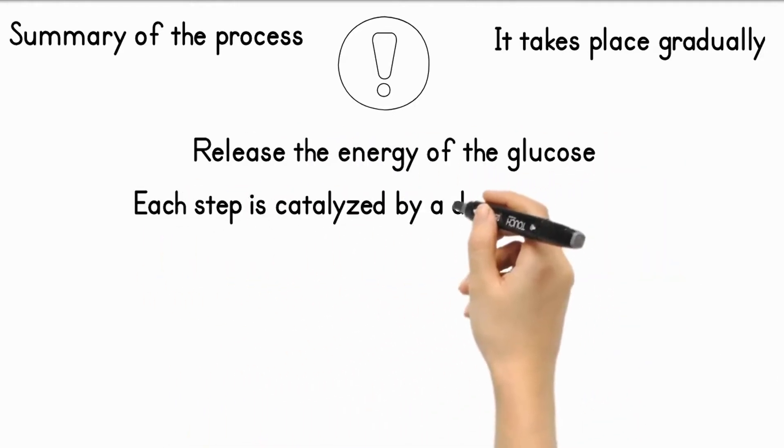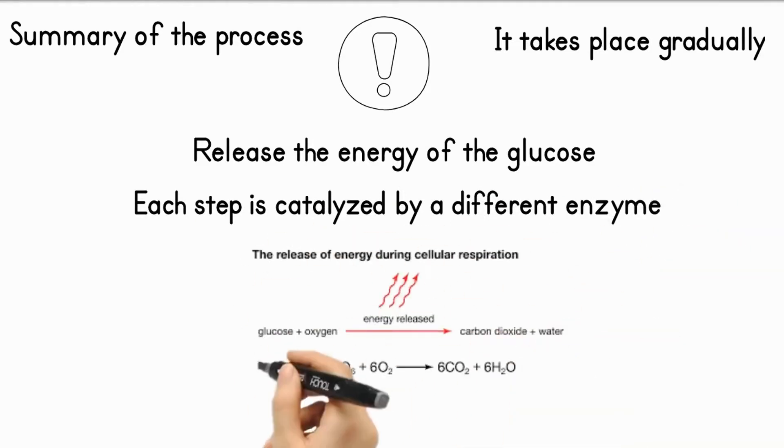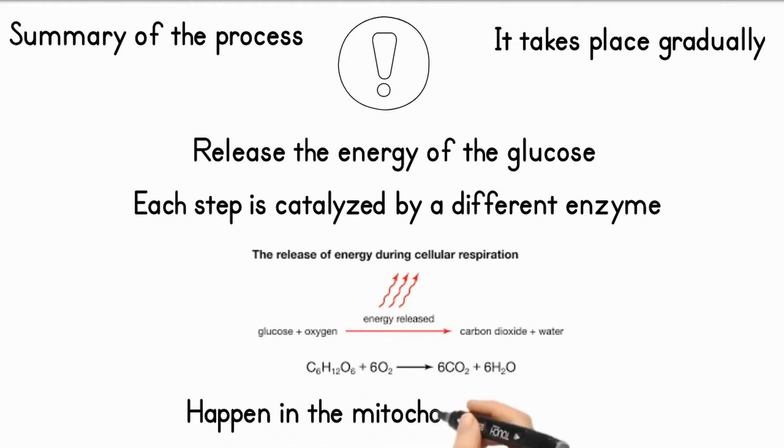Each step in the process is catalyzed by a different enzyme. The later steps in the process are the aerobic ones and these release the most energy. They happen in the mitochondria of the cell.